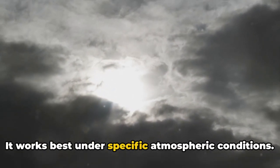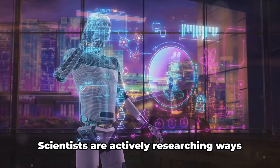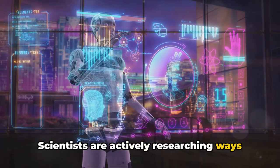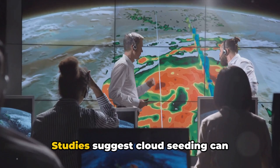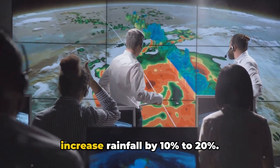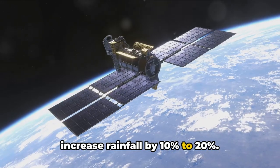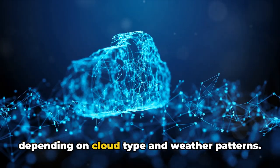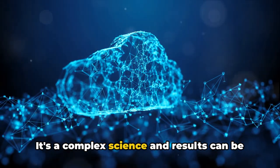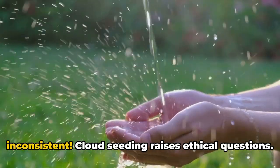While promising, cloud seeding isn't a guaranteed rainmaker. It works best under specific atmospheric conditions. Scientists are actively researching ways to improve its effectiveness and predict results more accurately. Studies suggest cloud seeding can increase rainfall by 10 percent to 20 percent. However, the success rate varies depending on cloud type and weather patterns. It's a complex science and results can be inconsistent.